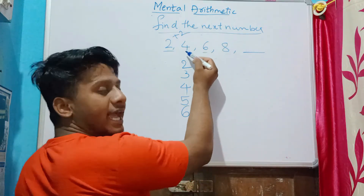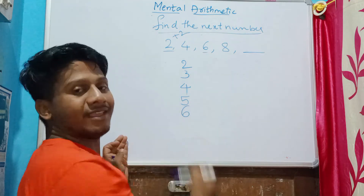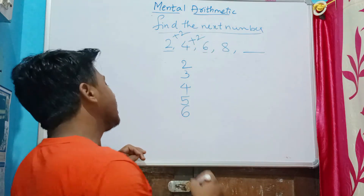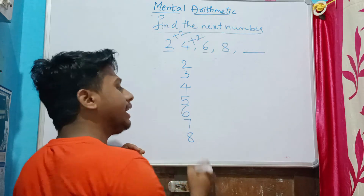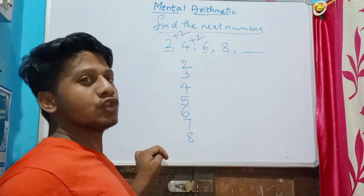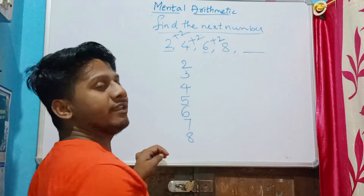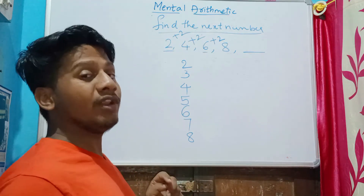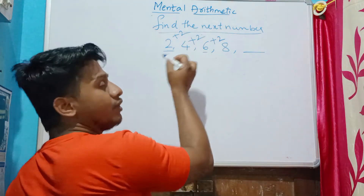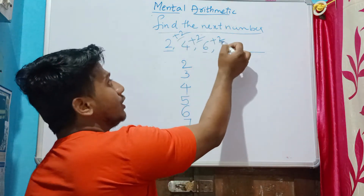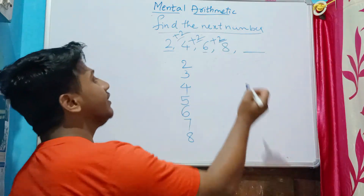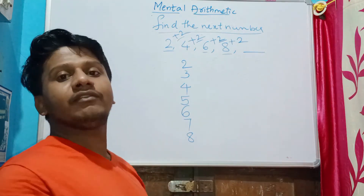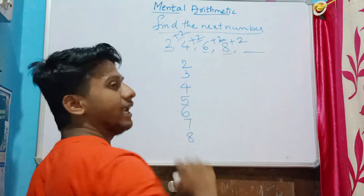The same way, the next number after four is six. What do I do — add or subtract? I add two to four to get six. Then after six, we have eight. I add two to six to get eight. So the pattern is: for each number we are adding two to get the next number.